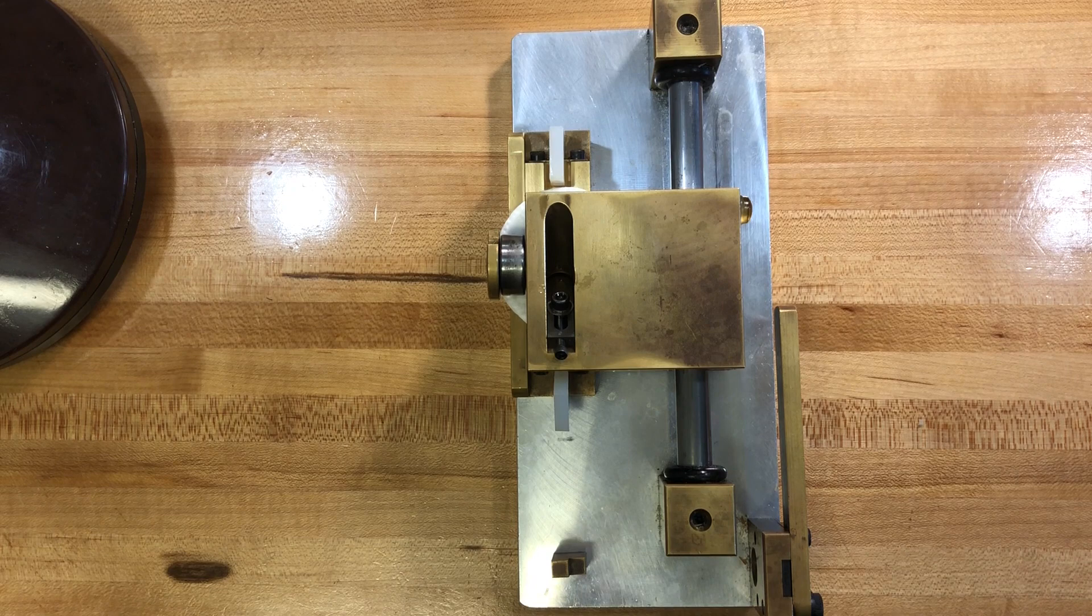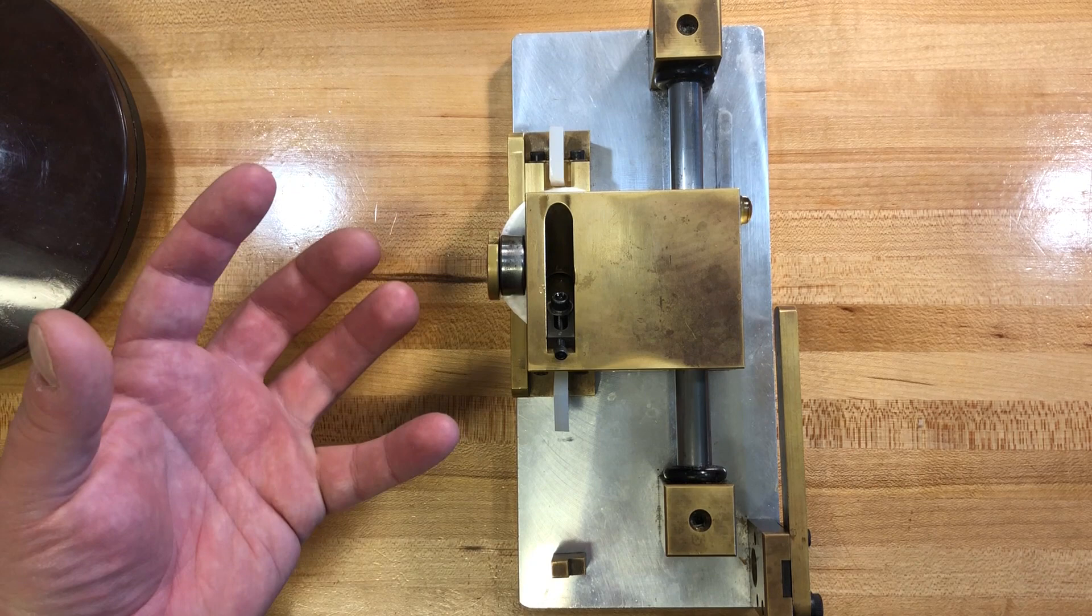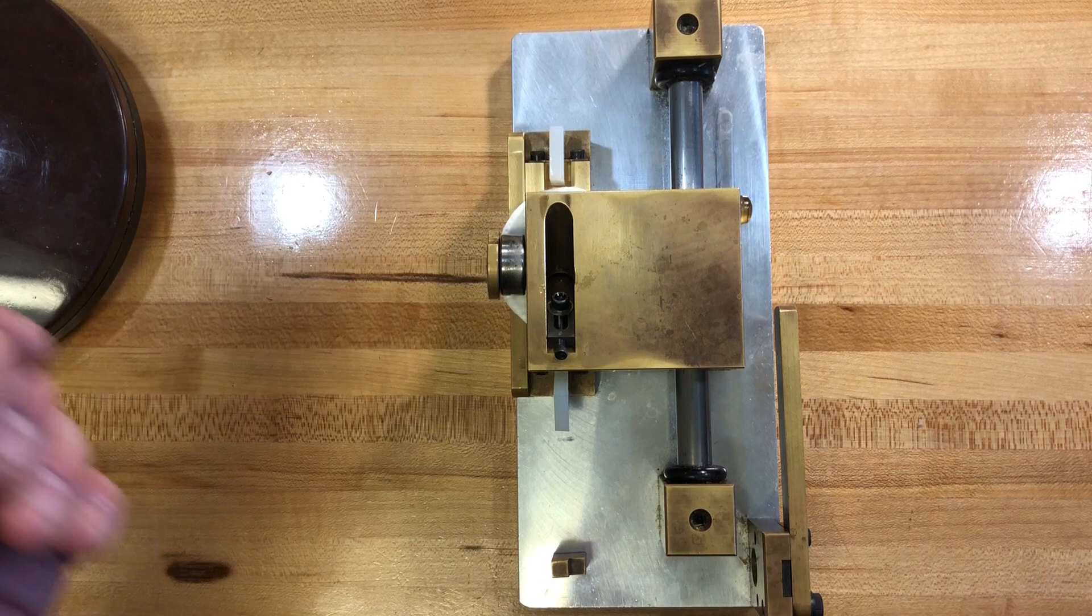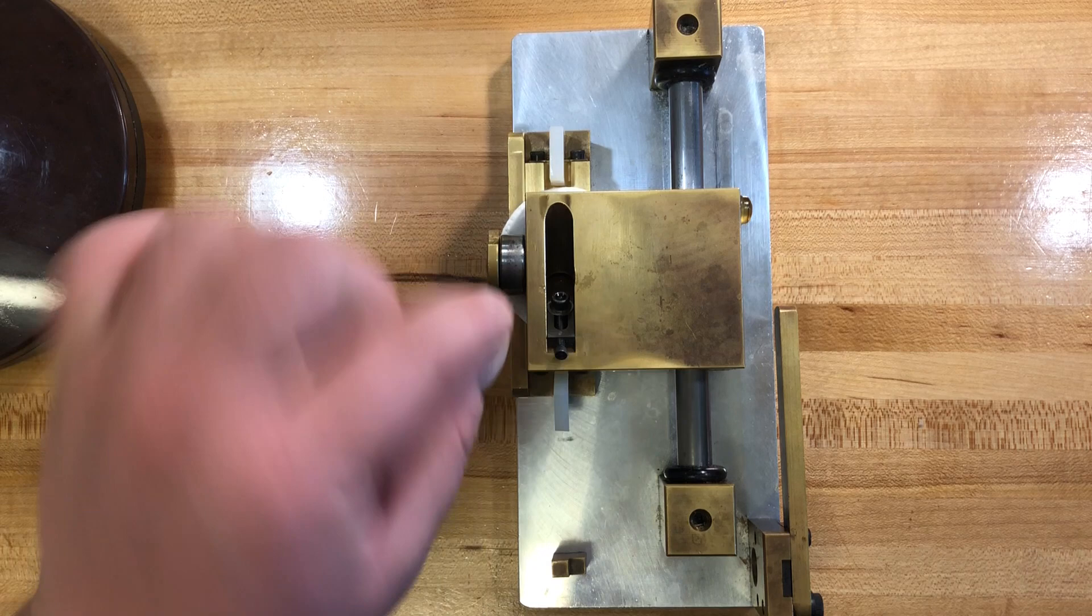I've seen some other people advocate not using a cotton ball because it could keep moisture next to the blade. And instead what they'll do is they'll take a little piece of paper or a cardboard covering from a razor blade and put oil on that and then carefully put oil on the blade and store it without the cotton.